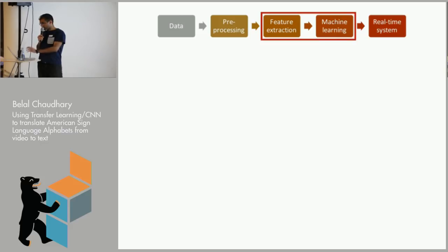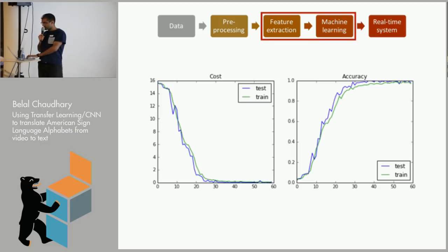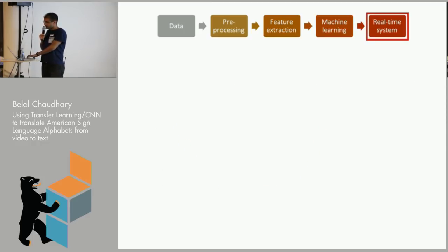So I took this and I ran it through the VGG16 architecture just for 50 epochs. And I got these very pretty curves. And I thought, well, I've cracked it. Like, this is going to work. And let's move on to the real-time system to see how it actually works.